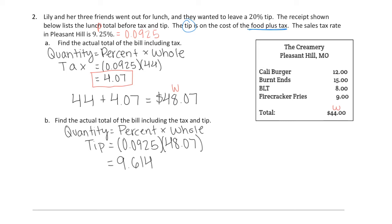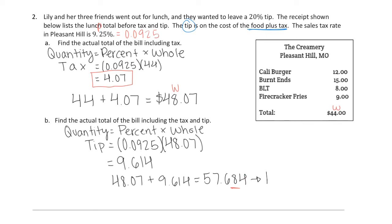Let's go ahead and add our whole with our tip: 48.07 plus 9.614, giving us a total of 57.684. We need to express this in terms of money, so we only go to the hundredths place. We look at the value to the right of the hundredths — if it's 5 or above, we round up; if it's 4 or below, it stays the same. Because this digit is 4, the 8 stays the same, so the total on their bill is going to be $57.68.